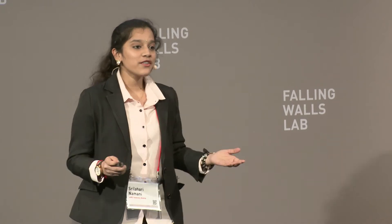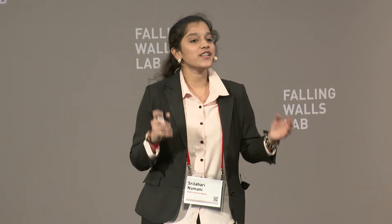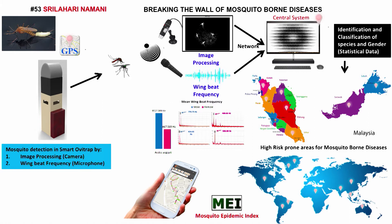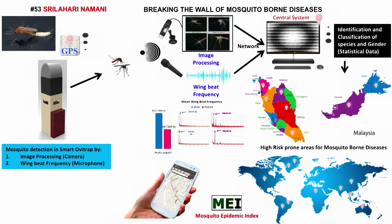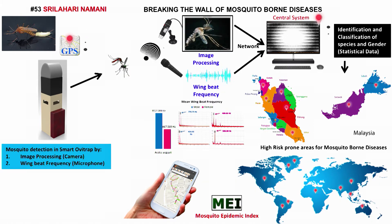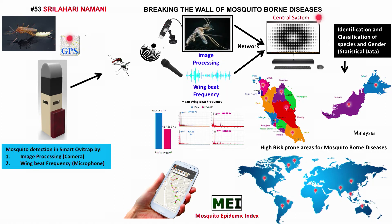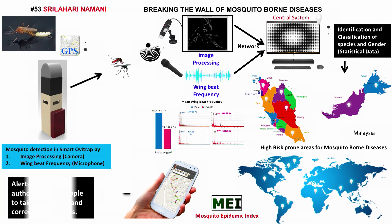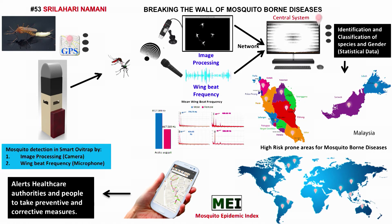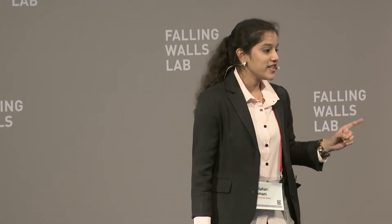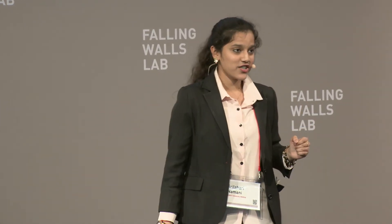A smartphone application is also developed with an index called MEI — Mosquito Epidemic Index — through which we can observe an increase in the mosquito population level. The data regarding the high-risk areas can be accessed by the general public, which enlightens them to take preventive measures and simultaneously alert the healthcare authorities for corrective actions.